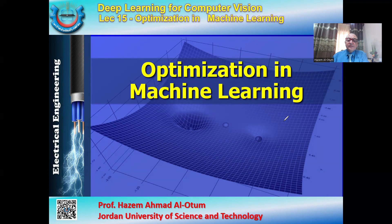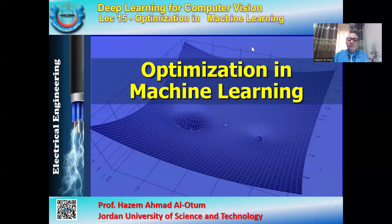As clear from the title of this lecture, it's optimization in machine learning. What is meant by optimization? Optimization is mainly the computation methods that can be used to iteratively minimize the error between the targeted output and the real or actual outputs for the overall system. It is very closely related to the cost function. When we minimize our errors, we improve the performance of the machine learning system using proper optimization techniques.